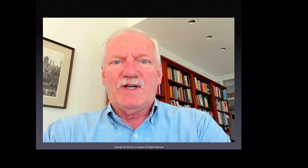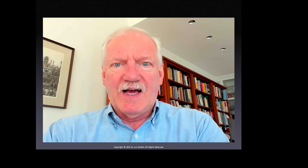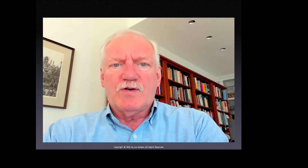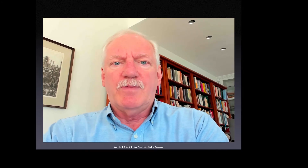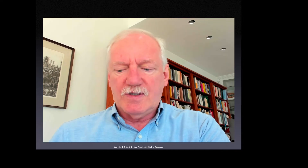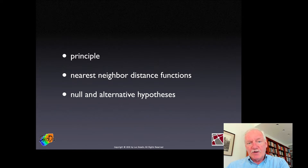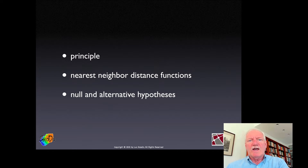Welcome again. We continue with the point pattern analysis and now we switch from the focus on intensity to a focus on distances, and particularly nearest neighbor distances. We'll talk about the idea behind the nearest neighbor statistic, then go over a number of distance functions, also referred to as the letter functions. I'll close with some illustration of what these functions look like under the null and different alternative hypotheses.